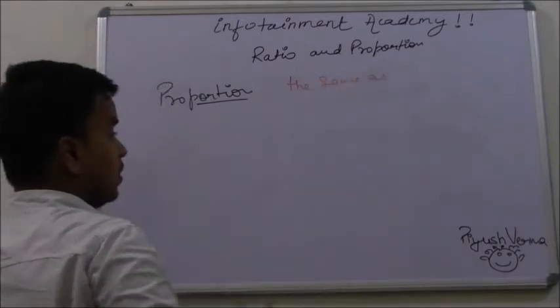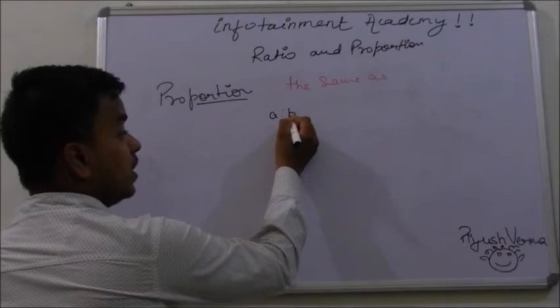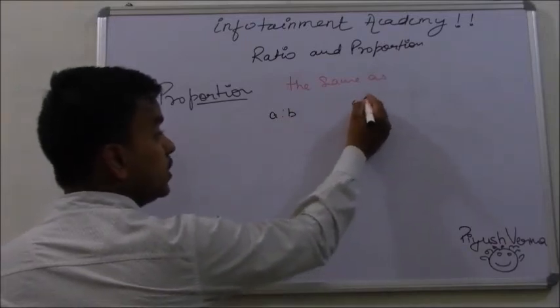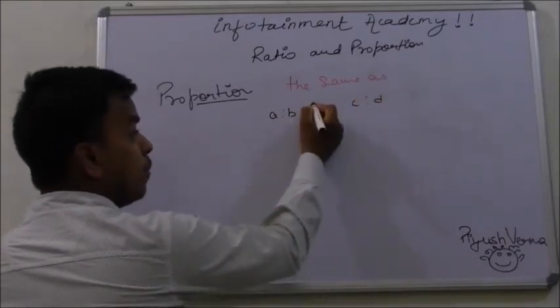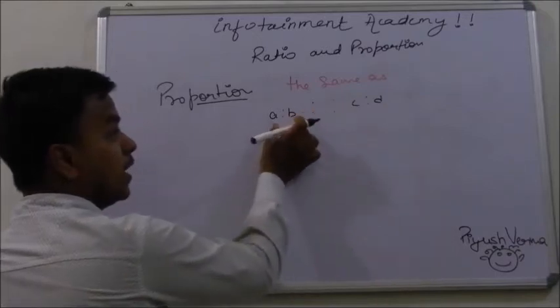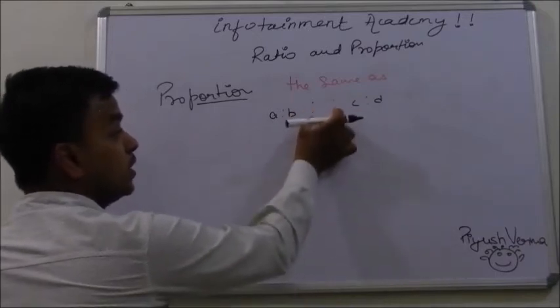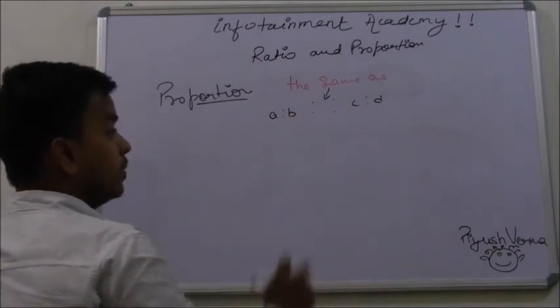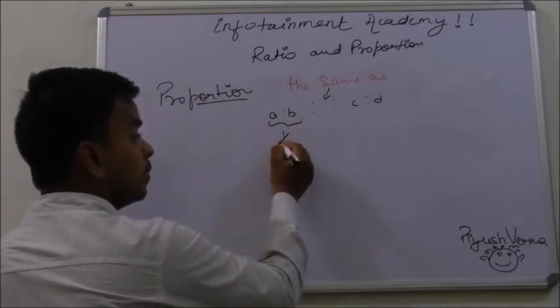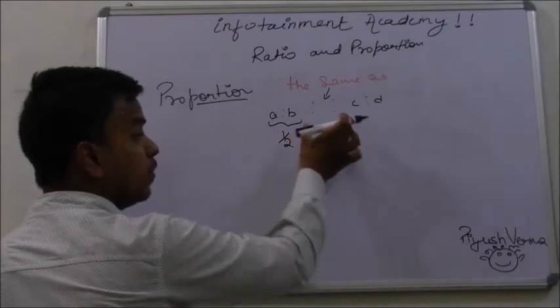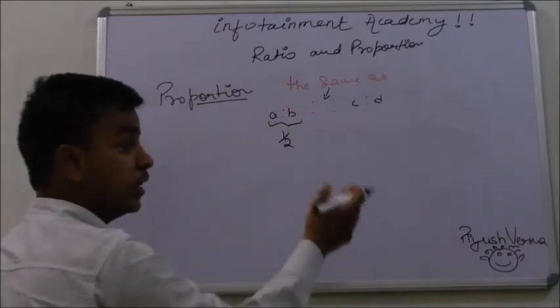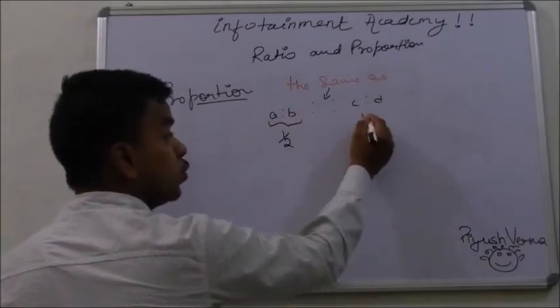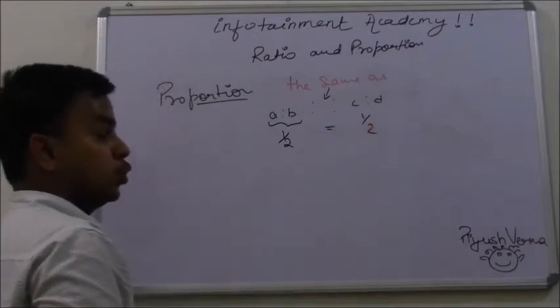If I am writing A is to B is in proportion to C is to D, then I will put double colon in between A:B and C:D. This means the same as. Proportion means if the ratio of A to B comes out to be 1 is to 2, and if A:B is in proportion with C:D, then the ratio of C to D should also equal 1 is to 2.